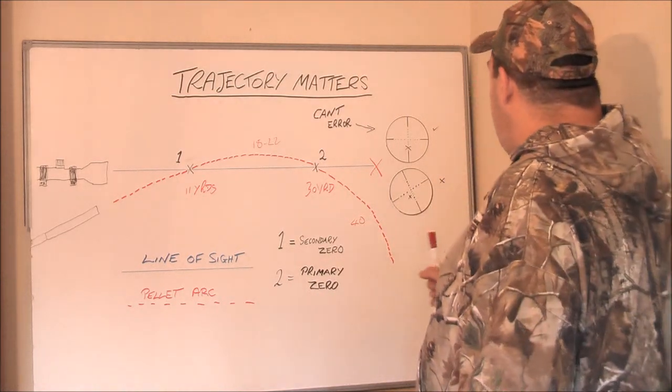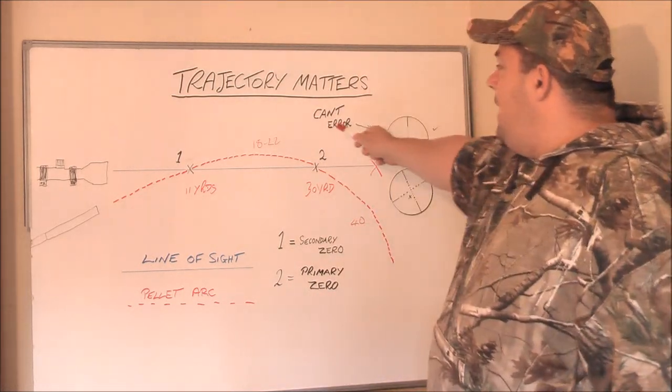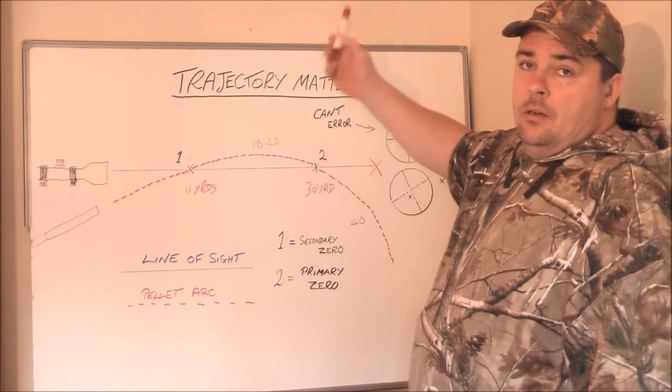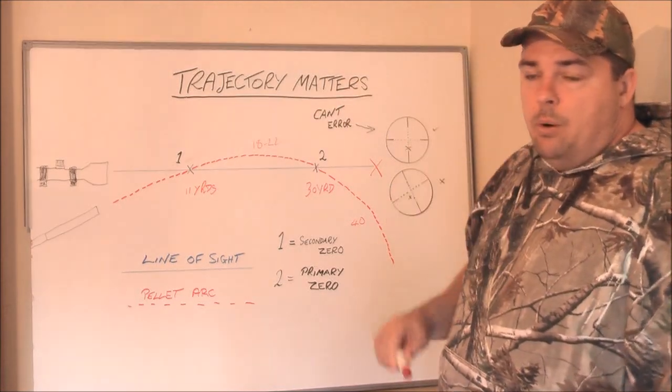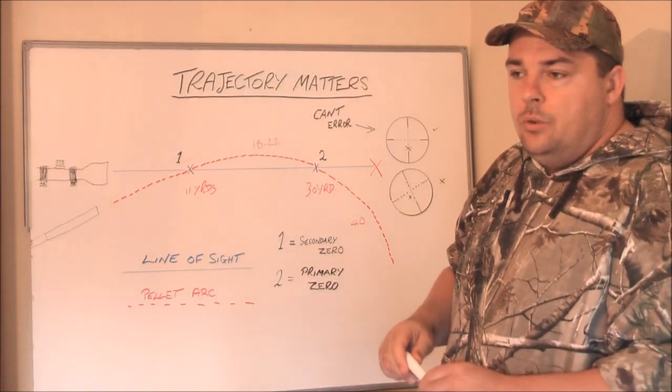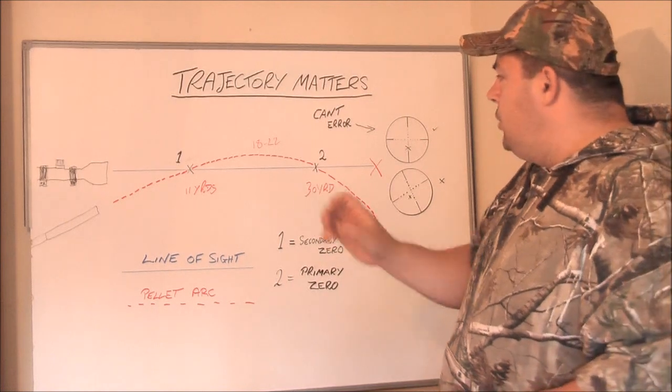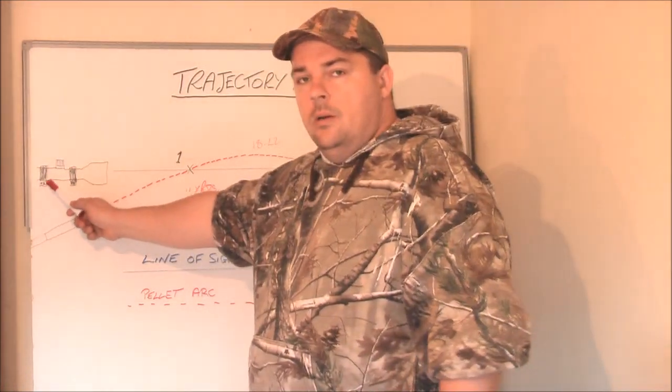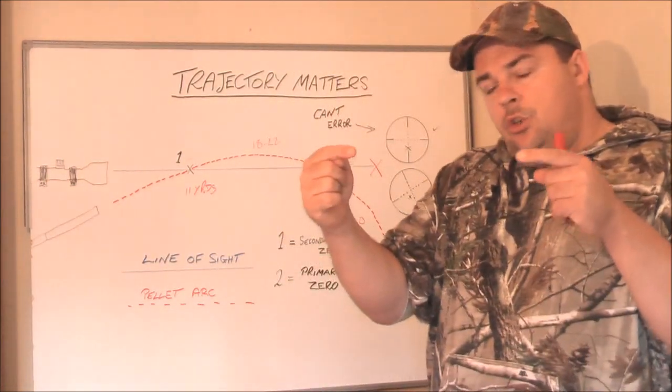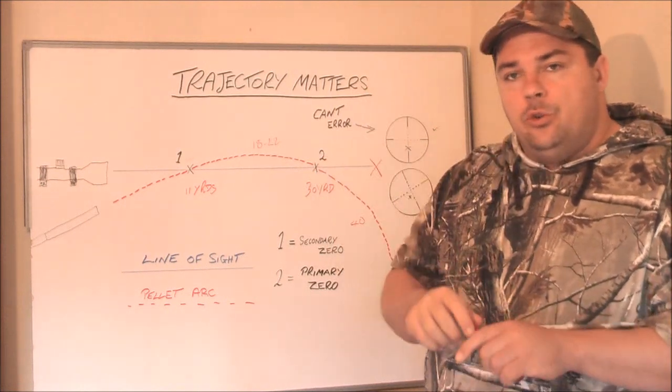Right. Another thing I would like to cover is cant error. I've recently bought a device called an AcuCover which goes on the back of the scope, and it's got these little chevrons that point towards your crosshair.